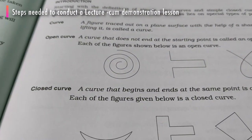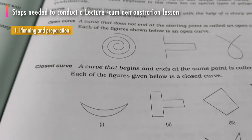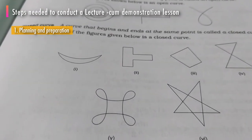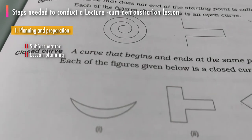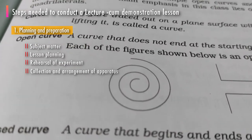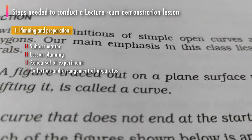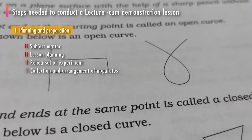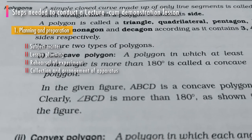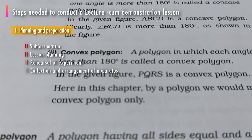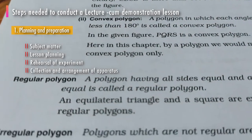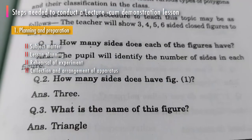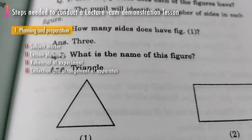The steps needed to conduct a lecture-cum-demonstration lesson: the first step is planning and preparation. While planning a demonstration, the following points should be kept in mind — subject matter, lesson planning, rehearsal of experiment, collection and arrangement of apparatus. The teacher should thoroughly go through the textbook relevant to the lesson, then prepare a lesson plan which should include the principles to be explained, list of experiments to be demonstrated, and type of questions to be asked. These questions are arranged in a systematic order.